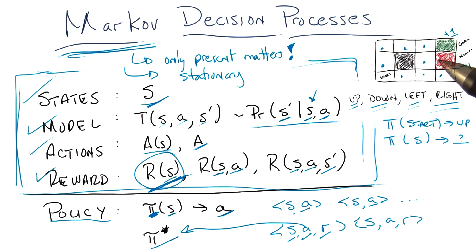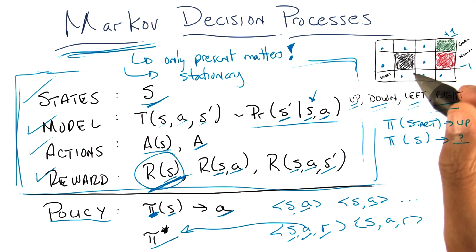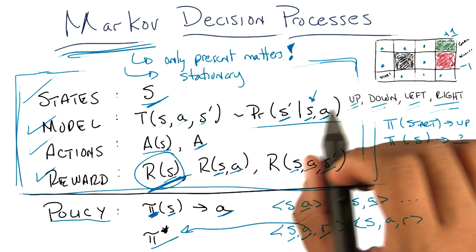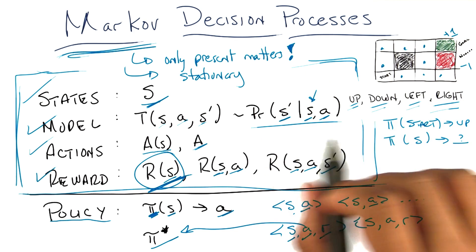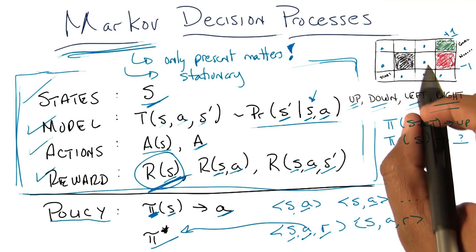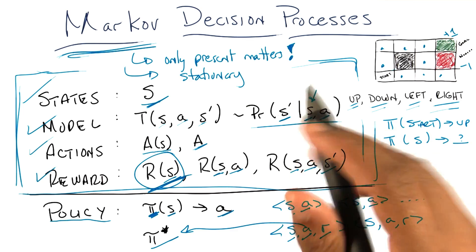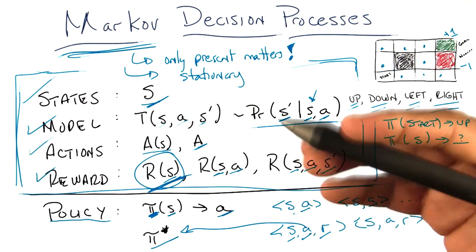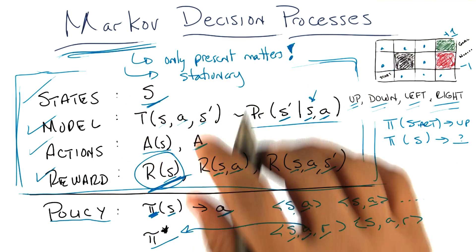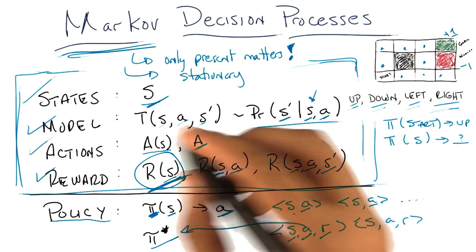You will then end up in another state because of the transition function, and then when you're in that state, you ask the policy: what action should I take now? This is a key point. Although we talked about it in the language of planning — which is common for people who take an AI course — the Markov decision process way, the reinforcement learning way of thinking about it, really doesn't talk about plans directly but instead talks about policies, from which you can infer a plan. This has the advantage that it tells you what to do everywhere, and it's robust to the underlying stochasticity of the world.